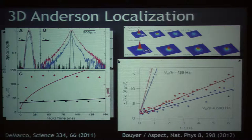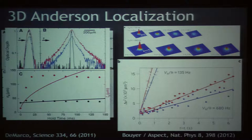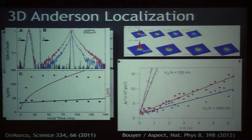Our understanding is that the localization lengths are much smaller than the initial size of the gas along the transverse direction — the gas is so strongly localized that you simply don't ever see anything happen. Along the long direction, the localization length is longer than the size of the gas, so it needs to go out and sample all that speckle and then eventually dynamically interfere with itself and localize. That process is interesting but not something people have spent a lot of time thinking about — though we can measure it.